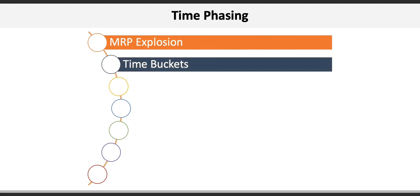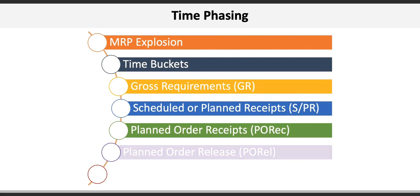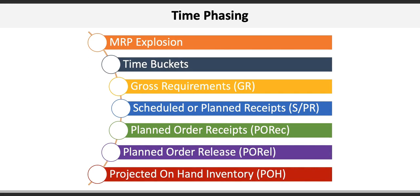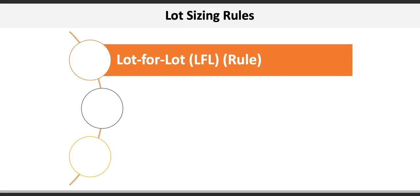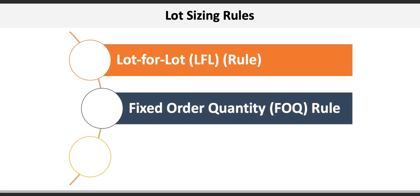MRP includes lot sizing, which is the process of determining the appropriate amount and timing of ordering to reduce costs. There are three general lot sizing rules used in production planning: the lot-for-lot (LFL) rule, which is an ordering schedule that covers gross requirements for each week generally resulting in varying lot sizes; the fixed order quantity (FOQ) rule, which uses fixed order sizes for every order or production run; and the period order quantity (POQ) rule, which is a variable model that factors in gross requirements and predetermined periods adjusted for inventory on hand.